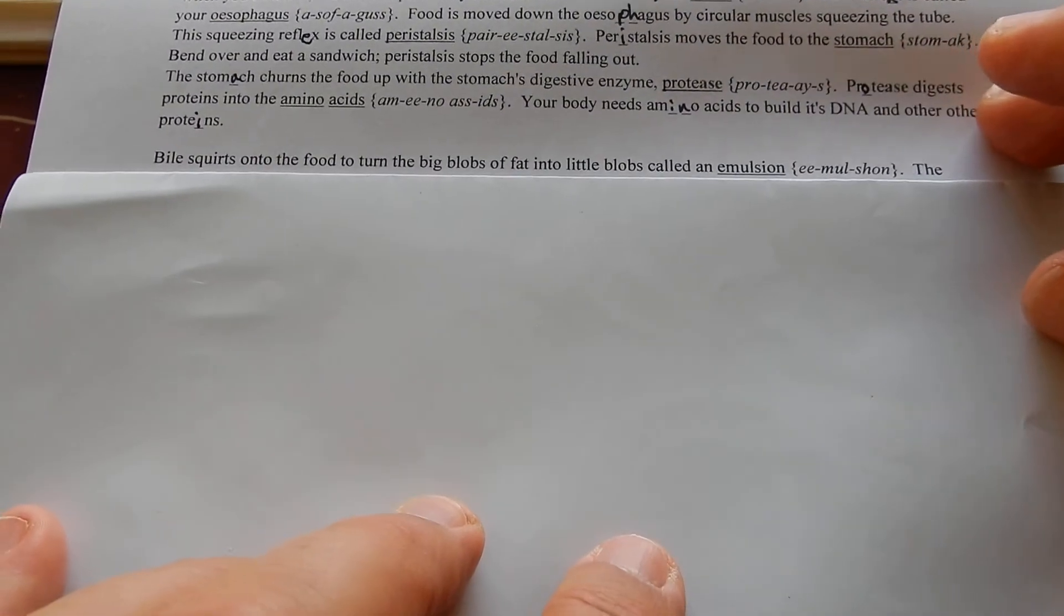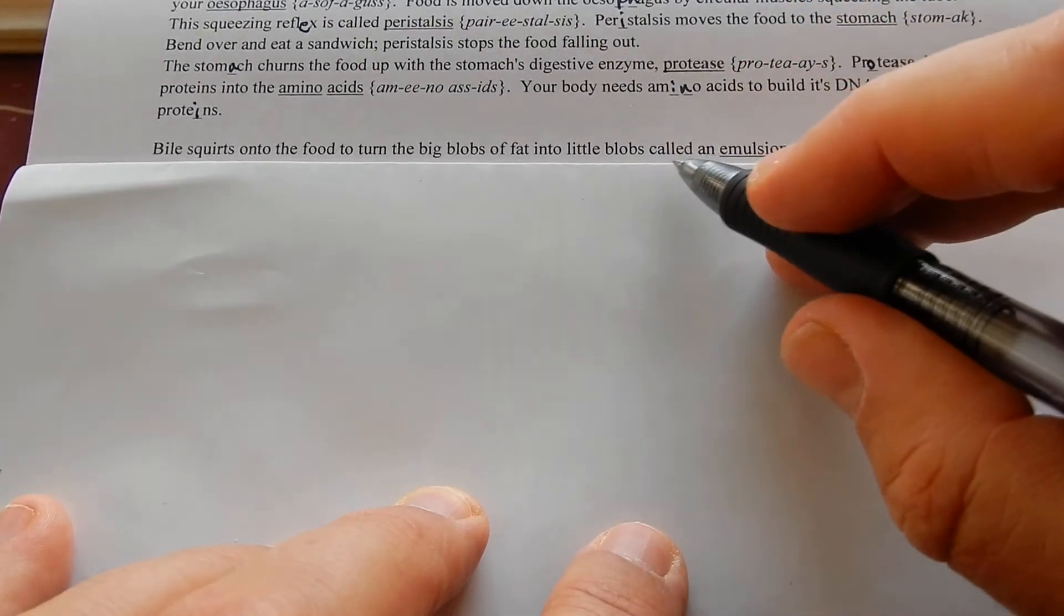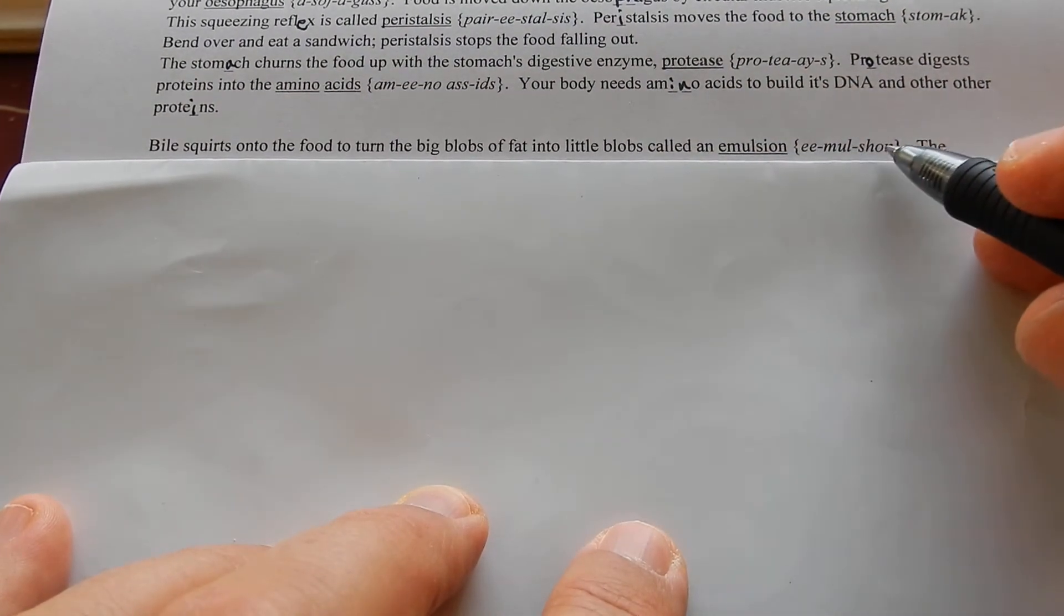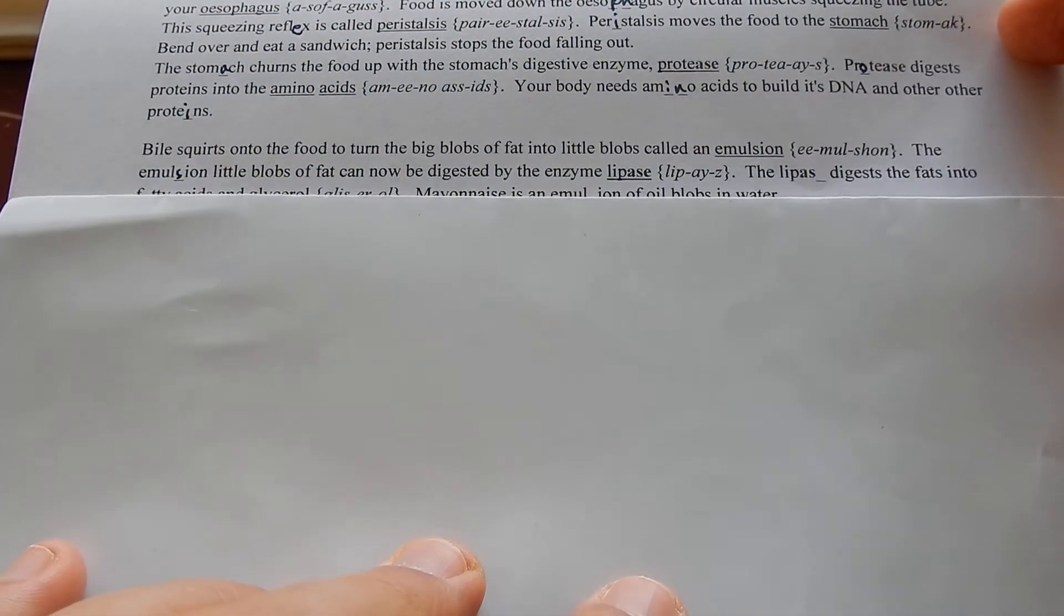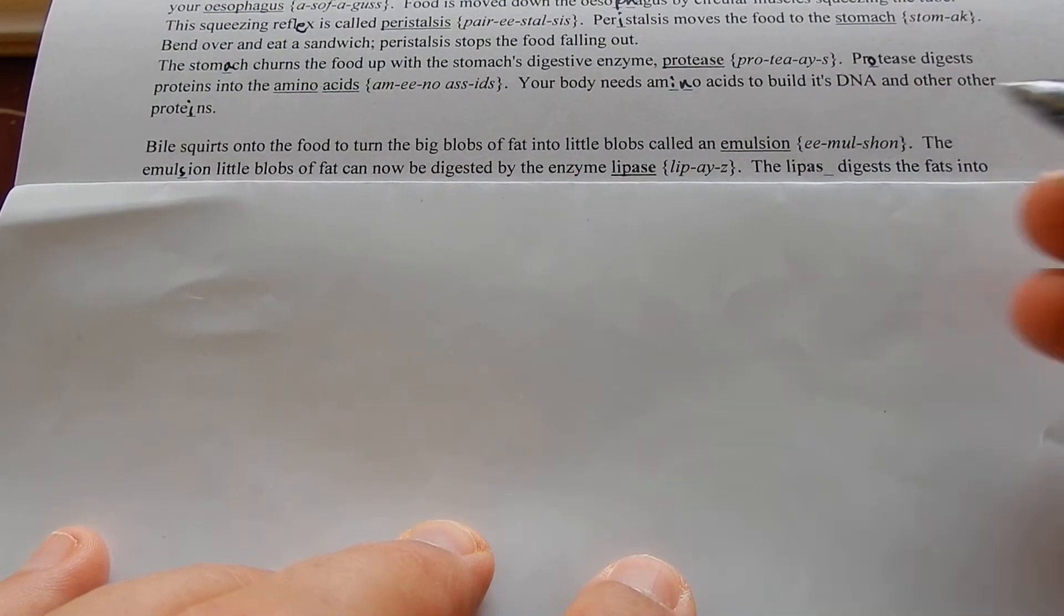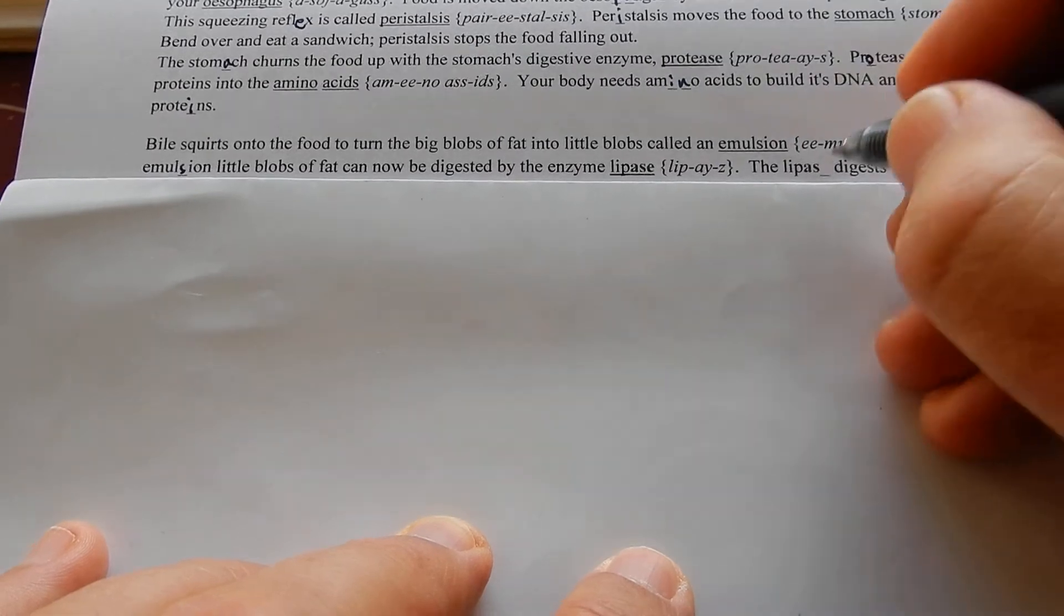Bile squirts onto the food to turn the big blobs of fat into little blobs called an emulsion. The emulsion little blobs of fat can now be digested with the enzyme lipase.